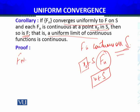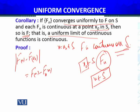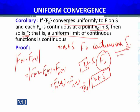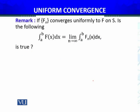The proof follows exactly the same lines. We take an arbitrary X₀ belonging to S, and recall the triangle inequality argument: |F(X) - F(X₀)| ≤ |F(X) - FN(X)| + |FN(X) - FN(X₀)| + |FN(X₀) - F(X₀)|. We then use uniform convergence and continuity of the sequence of functions at the point X₀. The only difference is that X₀ is not fixed — it is an arbitrary member of set S. So you can complete this proof yourself as a small exercise.